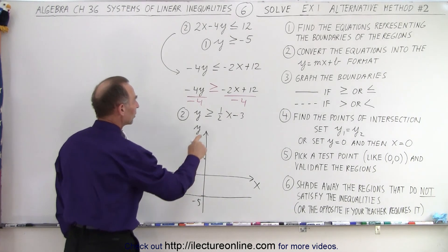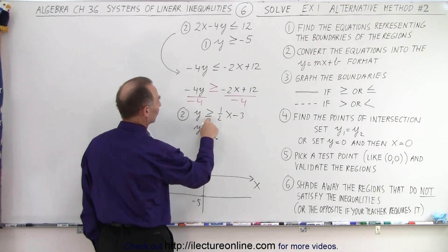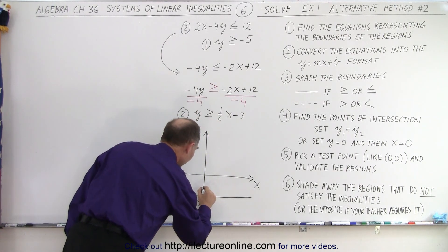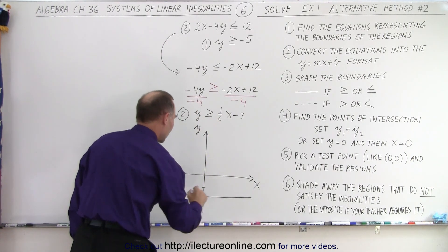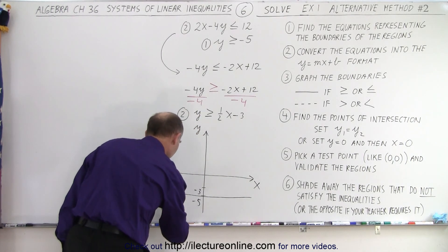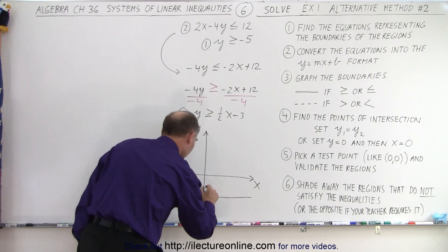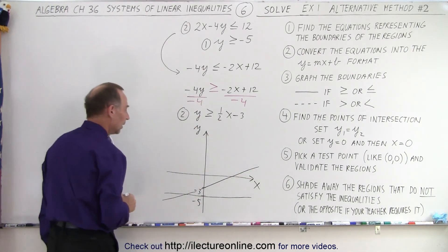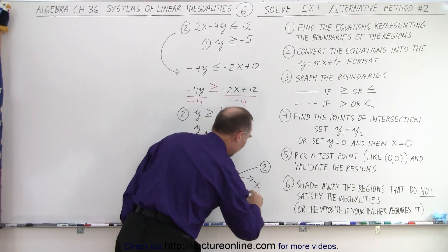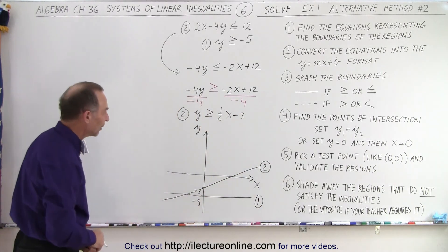Now we draw the other line. Again, imagine this would be an equal sign: y = ½x - 3. So -3 is the point at which it crosses. Let's put the -3 there, and the slope is ½x, so we draw a line like this, all the way through. We can also number them—this is line number two, this is line number one—to indicate the boundaries.